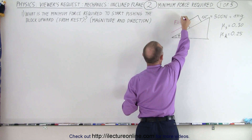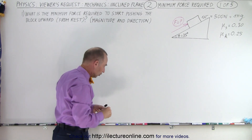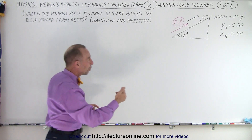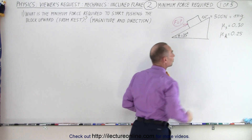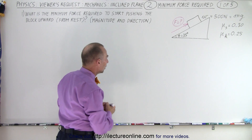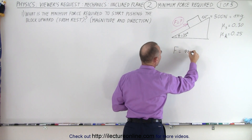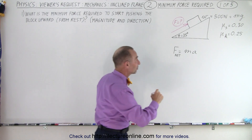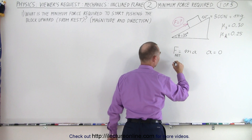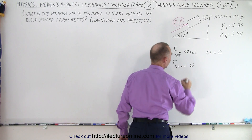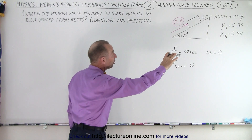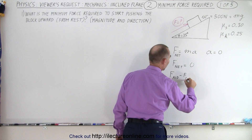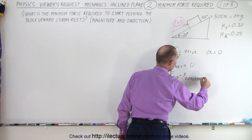So that's the force we're looking for, and we know it's going to be parallel to the incline. To find the magnitude, we use F = ma. We want the net force such that there's no acceleration — a equals zero — so the net force equals zero. We add up all the components that aid the push upward and subtract all the components that oppose, and that must equal zero.